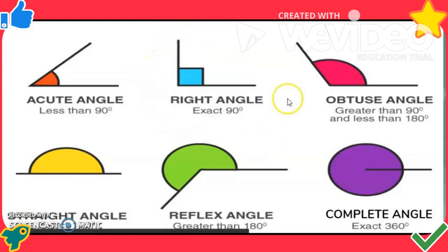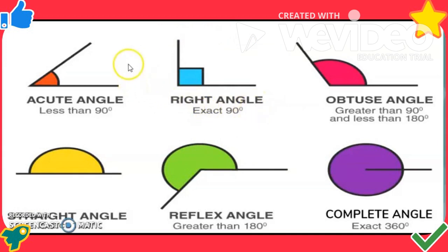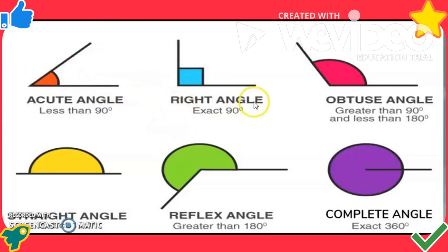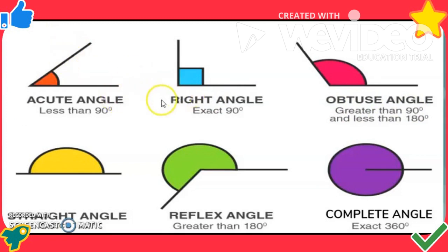An angle having 90 degree measurement is called a right angle. An angle with measurement less than 90 degrees is called an acute angle — acute angle is smaller than a right angle. An angle having measurement greater than 90 degrees is called an obtuse angle, which is bigger than a right angle.